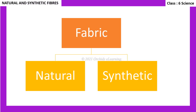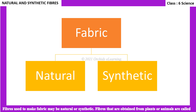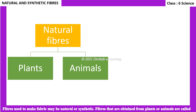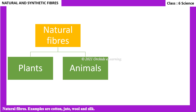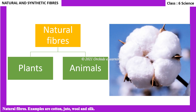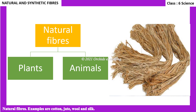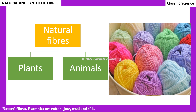Fibers used to make fabric may be natural or synthetic. Fibers that are obtained from plants or animals are called natural fibers. Examples include cotton, jute, wool, and silk.